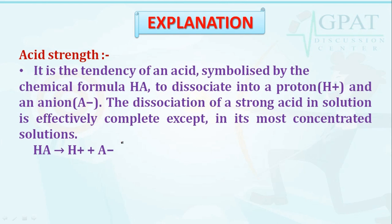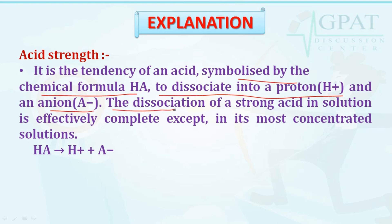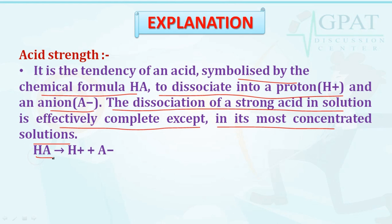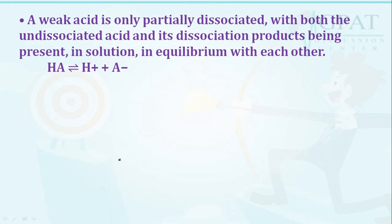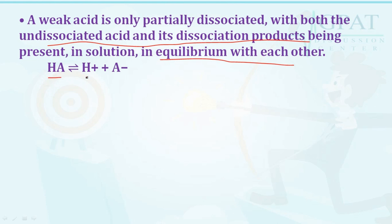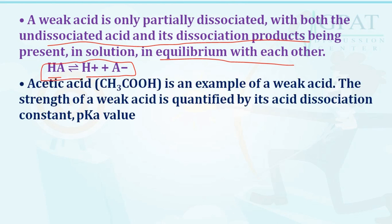Acid strength is the tendency of an acid (symbolized by HA) to dissociate into a proton and an anion. The dissociation of a strong acid in solution is effectively complete except in its most concentrated solutions. Examples of strong acids are hydrochloric acid, perchloric acid, nitric acid, and sulfuric acid. A weak acid is only partially dissociated, with both undissociated acid and its dissociation products present in solution in equilibrium. The strength of a weak acid is quantified by its acid dissociation constant, the pKa value.